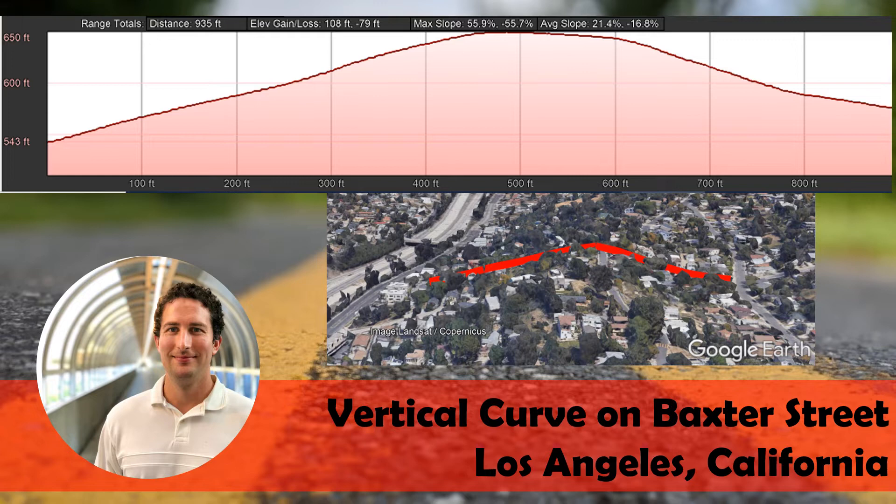There was a recent driver who rented a Tesla and drove up the slope at a very high rate of speed to purposely get airborne on the other side. So we'll take a look at what is the design speed of this vertical curve on Baxter Street.